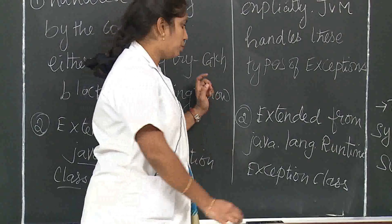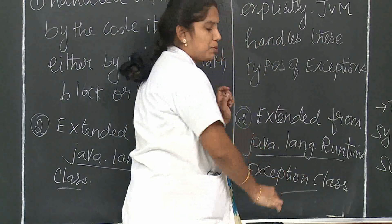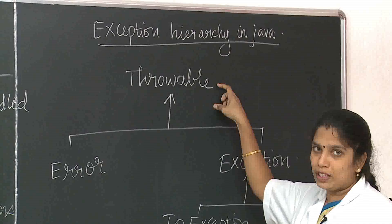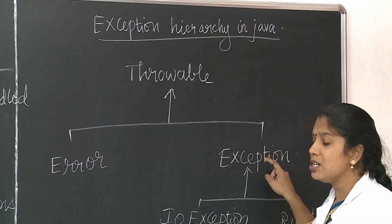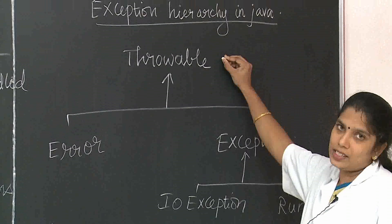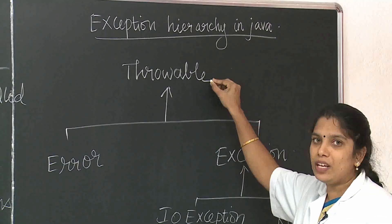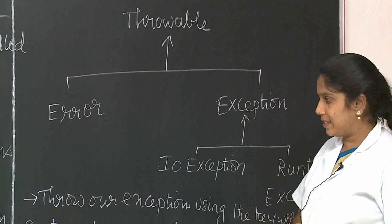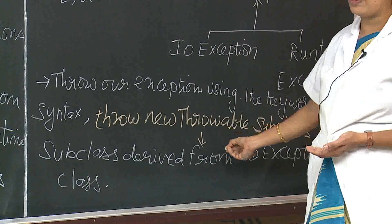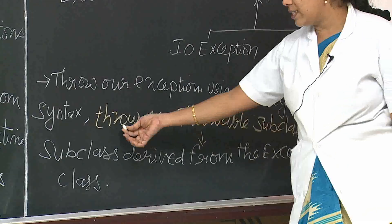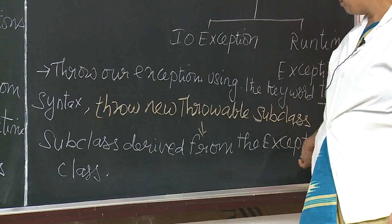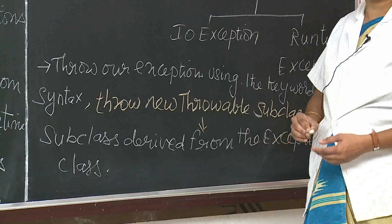For checked exceptions we extend java.lang.Exception class, while for unchecked exceptions we use java.lang.RuntimeException class. The exception hierarchy in Java starts with Throwable, which is inherited by Error and Exception. Exception is further inherited by IOException and RuntimeException. The keyword throw is used to throw exceptions, with syntax: throw new ThrowableSubclass.